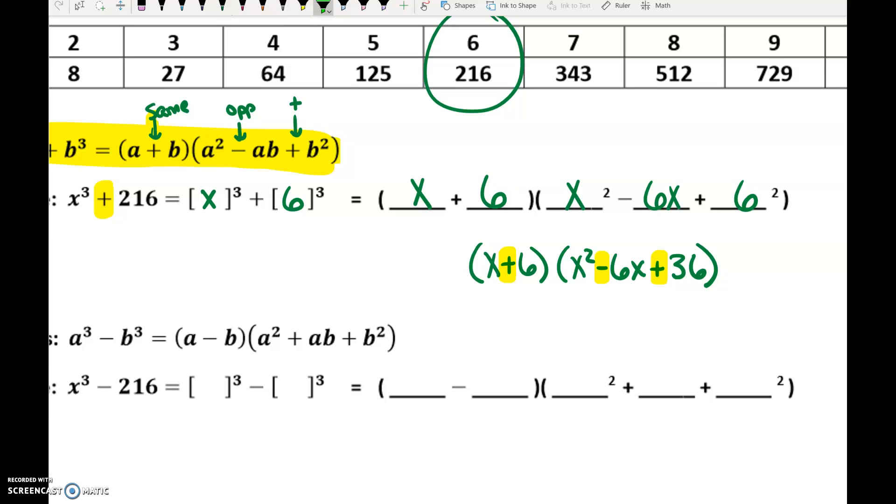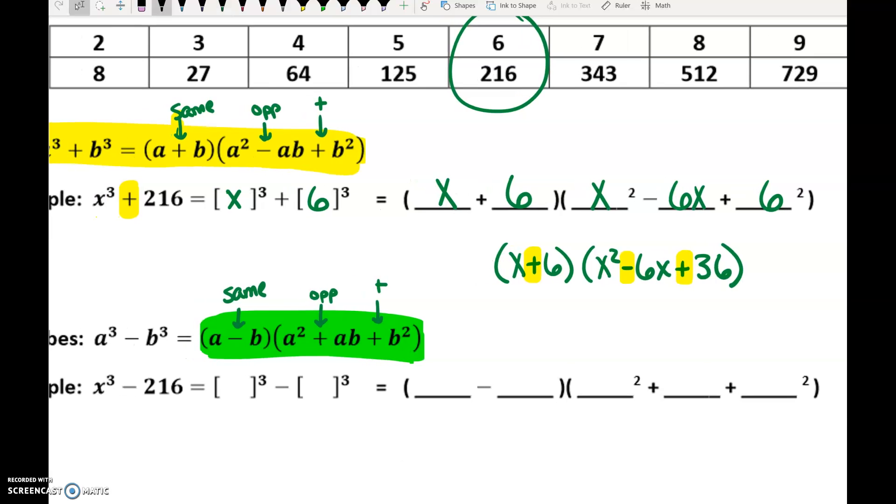For the difference of two cubes, this formula is exactly the same except for the symbols. This is minus, it's the same as what we started with. This symbol is the opposite. And this symbol is always plus. So if we had X cubed minus 216, X cubed minus 6 cubed, it would be X minus 6, X squared plus 6X plus 6 squared, which is 36.